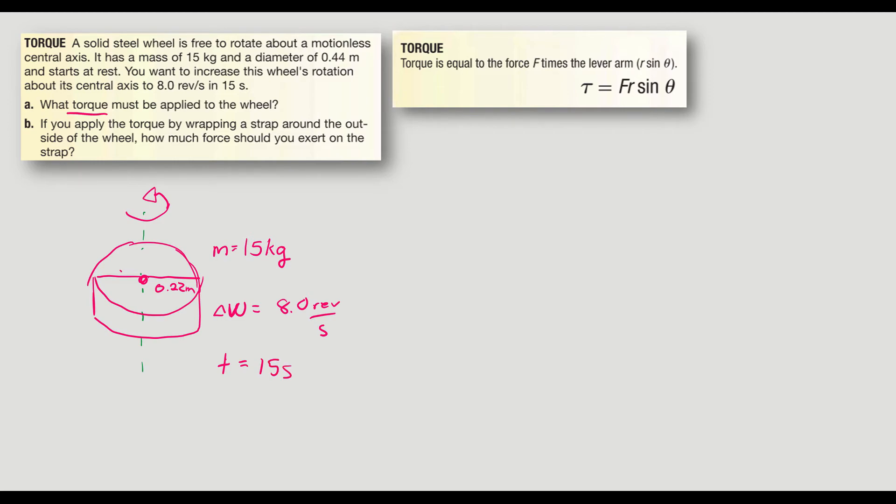So we want our angular velocity to be 8 revolutions per second. And that to take 15 seconds. What torque must be applied? We've got to unravel a lot here. First of all, we can think torque is force times the radius times sine theta. But I don't know what force is being applied to this. Someone's going to spin this somehow. I don't know how much force they have to spin it.